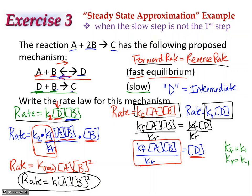That is the conceptual understanding behind the steady-state approximation: the equilibrium forward and reverse rates are equal, and that equality allows us to substitute and eliminate intermediates to get the overall rate law expressed only in terms of reactants.